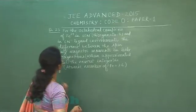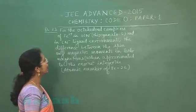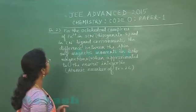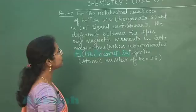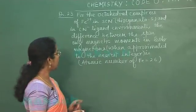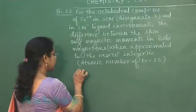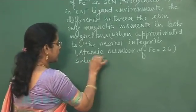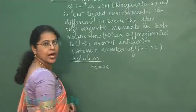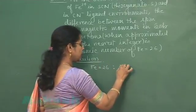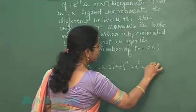Next question of paper is question number 23. For the octahedral complexes of Fe3 positive ion in thiocyanate S and in cyanide ion ligand environments, the difference between the spin-only magnetic moment in Bohr's magneton when approximated to the nearest integer. Atomic number of iron is given. Let us start this question. Atomic number of iron is given 26 and its electronic configuration will be argon 18, 3D6, 4S2.